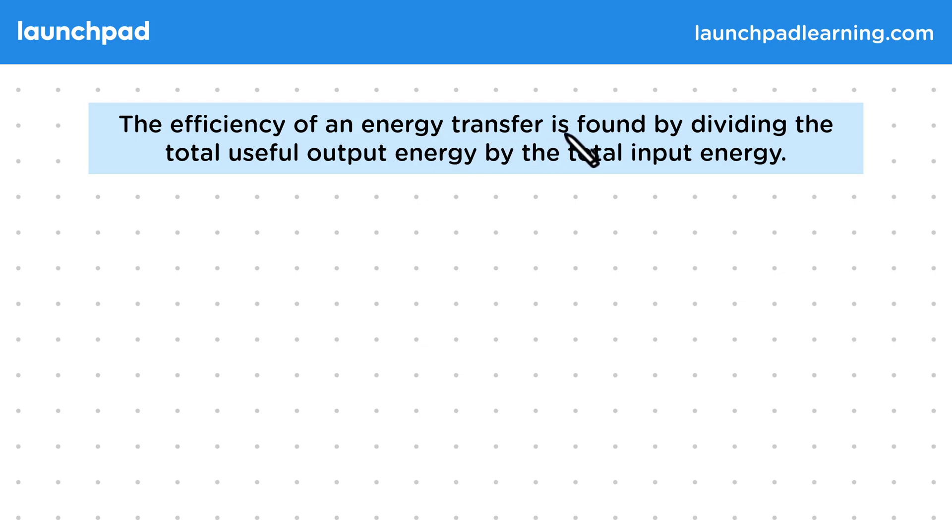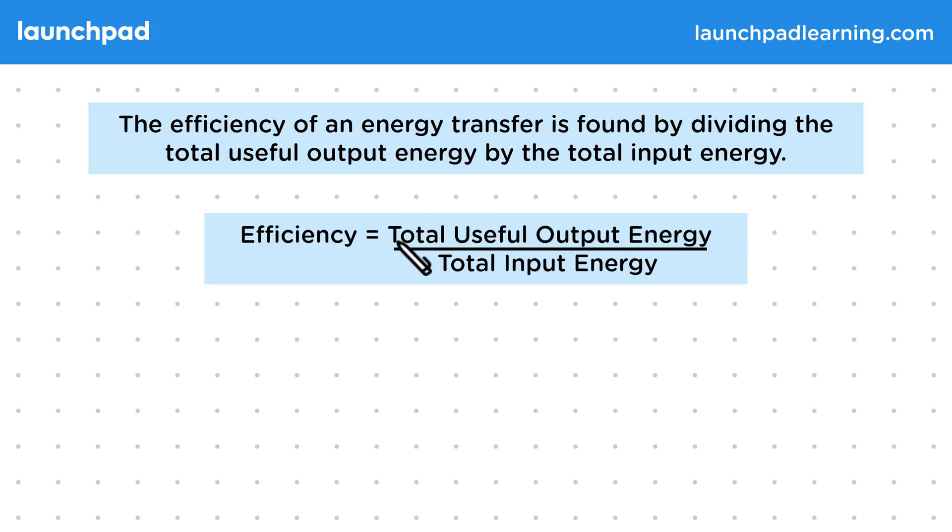The efficiency of an energy transfer is found by dividing the total useful output energy by the total input energy. Remember that efficiency is the proportion of input energy that becomes useful output energy in a process. As an equation, efficiency is equal to the total useful output energy divided by the total input energy.